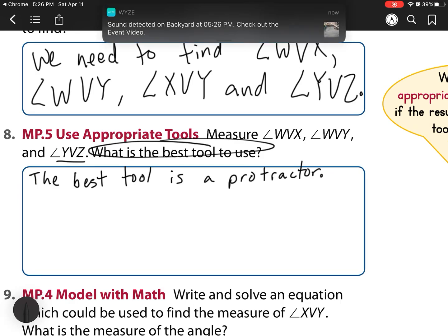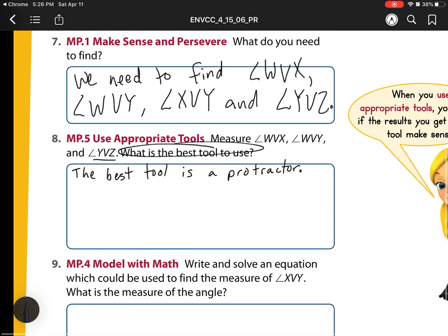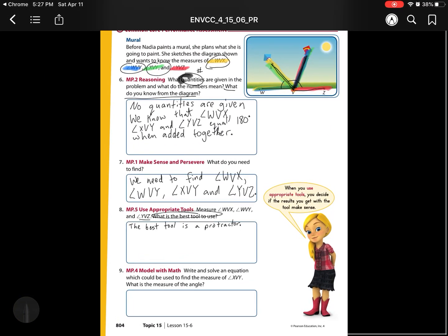And then we're going to measure it. Since I can't show you the protractor on my iPad, we're just going to have to follow along. So here, angle WVX. That's this angle right here, this yellow one. When I measure angle WVX, that was 50 degrees. So I'm going to zoom in here.